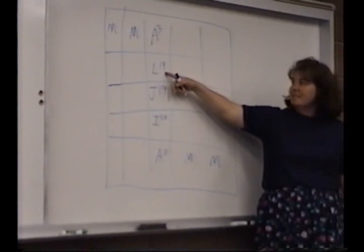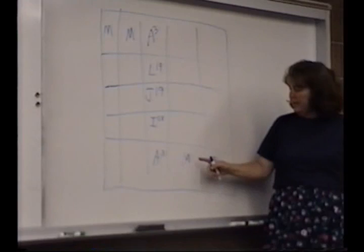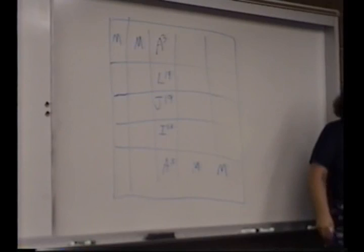Let me just do that one more time. Job 19, Leviticus 19, Isaiah 53, Amos 3, Abraham 3, Malachi, Malachi, Moses, Moses. Okay? And then the rest of it's easy because we sing the little song.